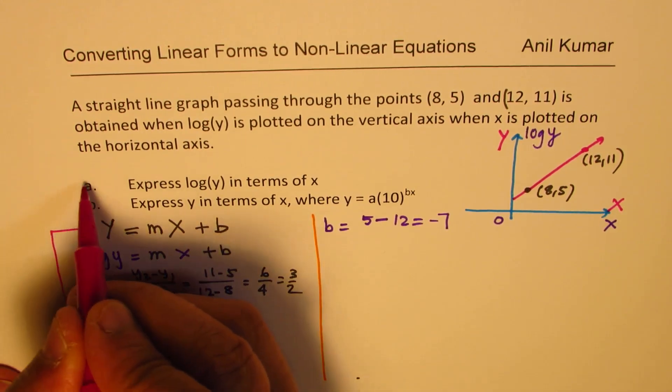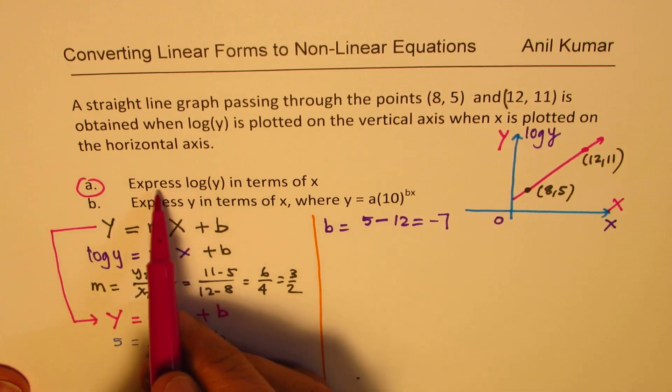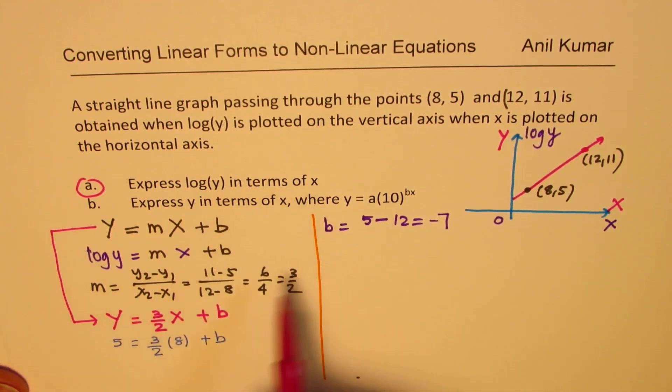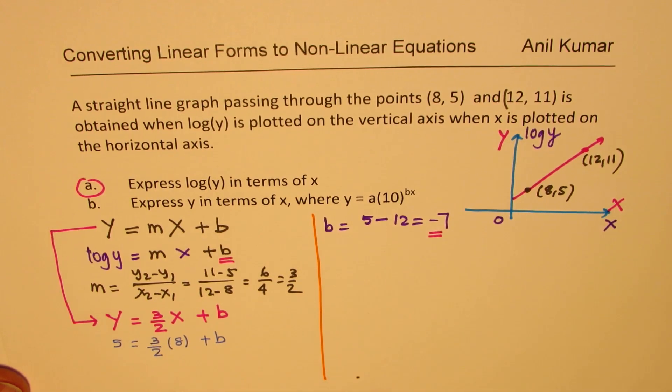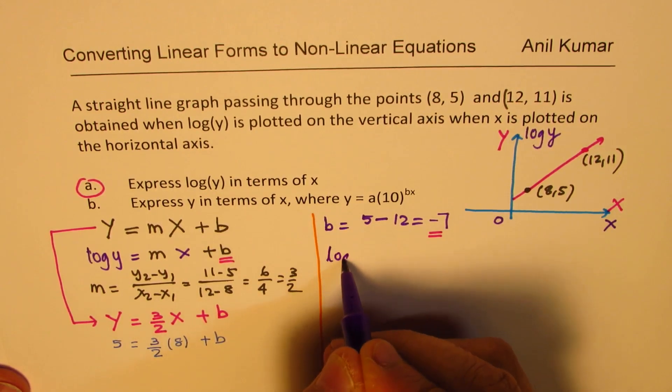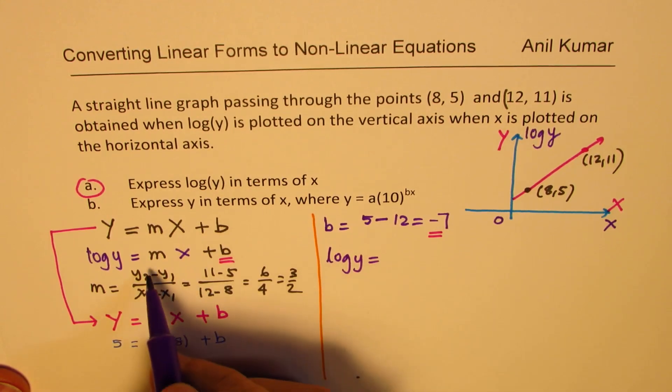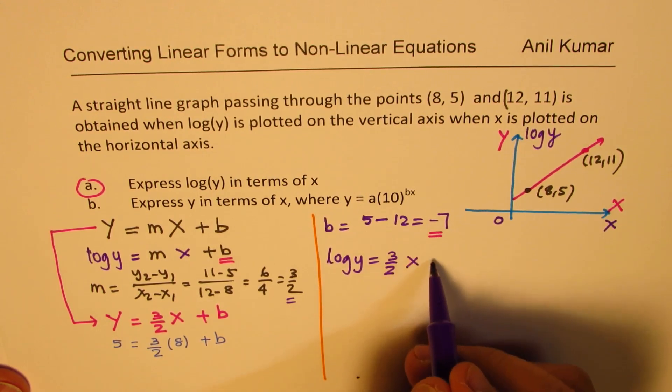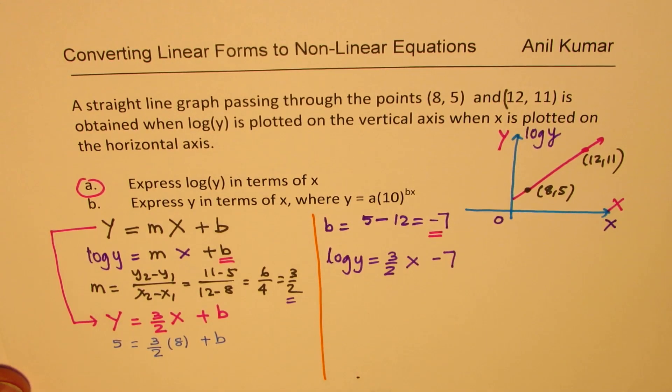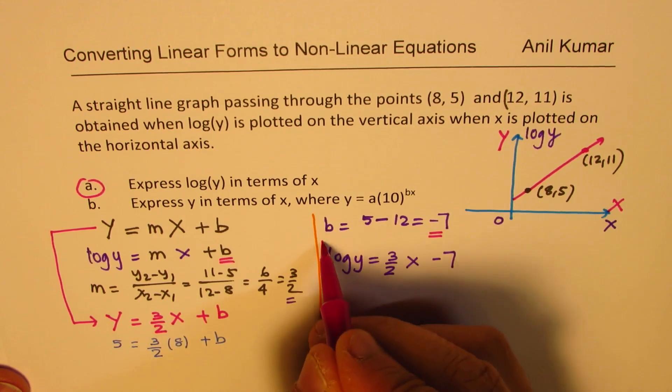Once we get the value of b as -7, we can actually do part a, which is express log(y) in terms of x. So we now know what b is, which is -7. Therefore, we can now write down that log of y is equal to m, which is 3/2, times x, and b is -7. So that becomes our solution of part a.